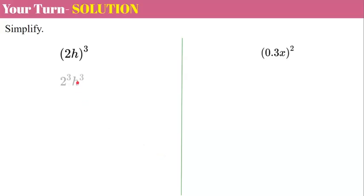Welcome back. So we're going to share the exponent of 3 to both the 2 and the h. 2 cubed is 8, so 8h cubed. Here we have 0.3 or 3 tenths times x. So we're going to square both. 3 tenths squared multiplied by x squared. And 3 tenths squared is 9 one hundredths. So 9 one hundredths times x squared.